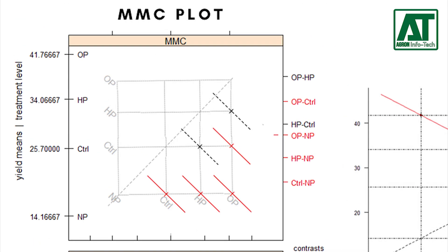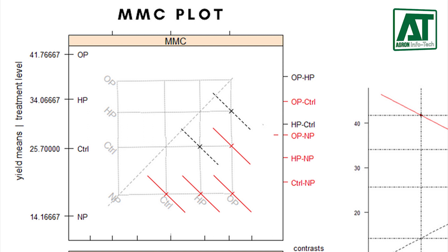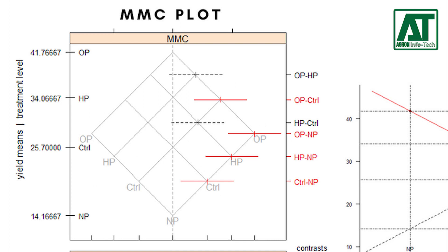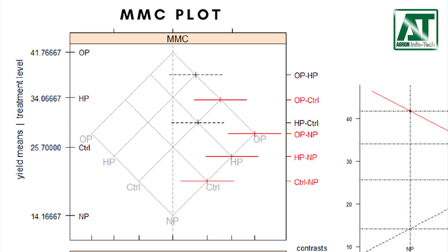The MMC plot is designed as a crossing of the means of a response variable at the levels of one factor with itself. It is then rotated 45 degrees — unlike the Defo graph — so the horizontal axis can be interpreted as the differences in mean levels, and the vertical axis can be interpreted as the weighted averages of the means comprising each comparison. This class of plots is used to display the results of a multiple comparison procedure.